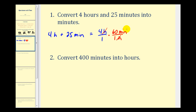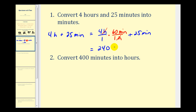But we still have to add the extra twenty-five minutes. Performing the calculation: four times sixty is two hundred forty, and that's now in minutes. Plus twenty-five minutes gives us a total of two hundred sixty-five minutes.